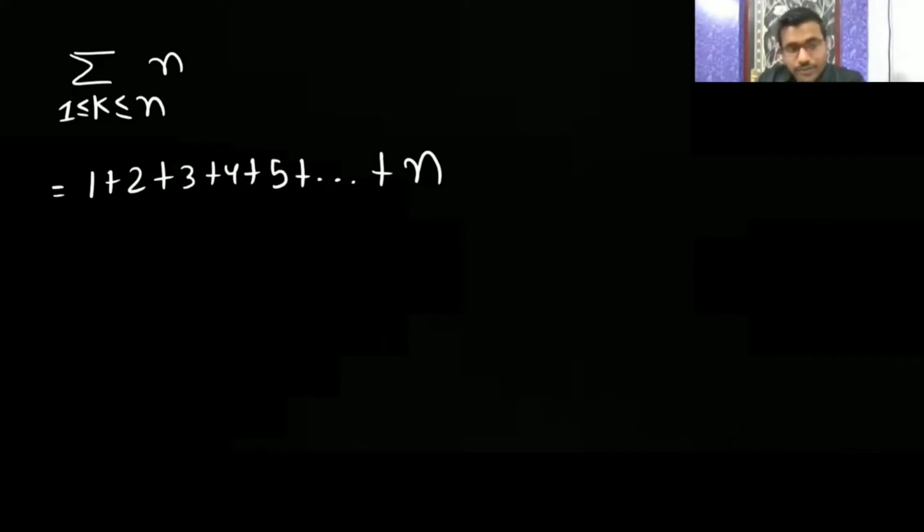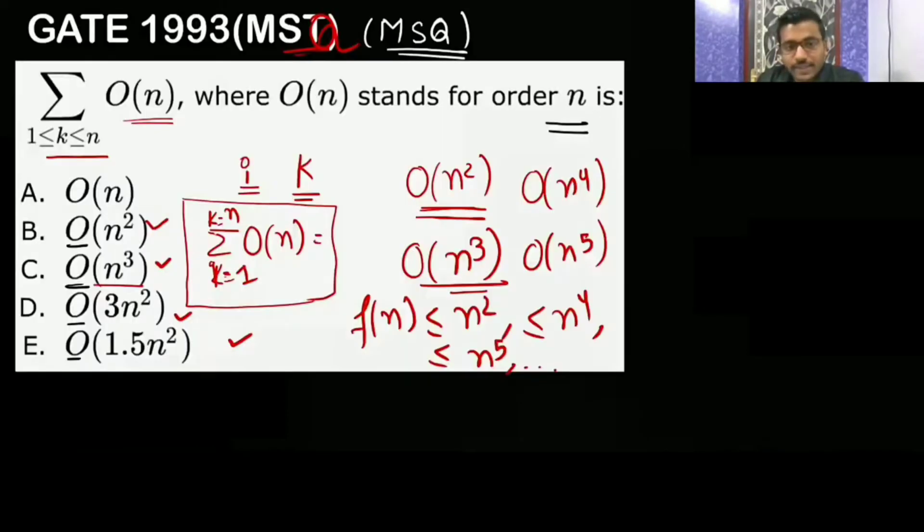Since you have substituted in place of O(n) only n, the summation becomes n(n+1)/2, which is O(n²) because the upper bound is n².